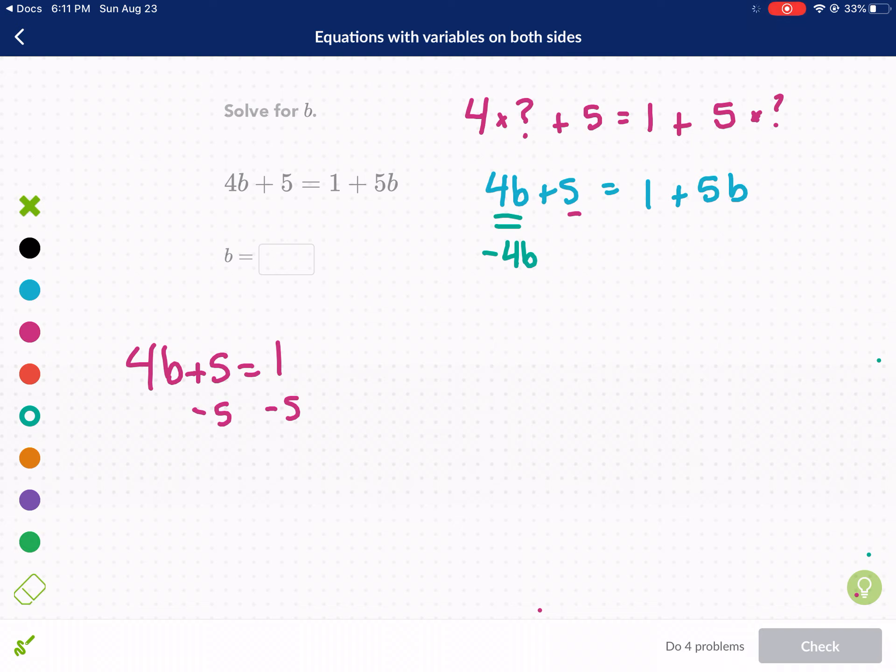Now, what we do to one side, we have to do to the other side. So we subtract 4b on the right side also. What happens? Well, 4b minus 4b cancels out. It becomes 0. 0 plus 5 is just 5.